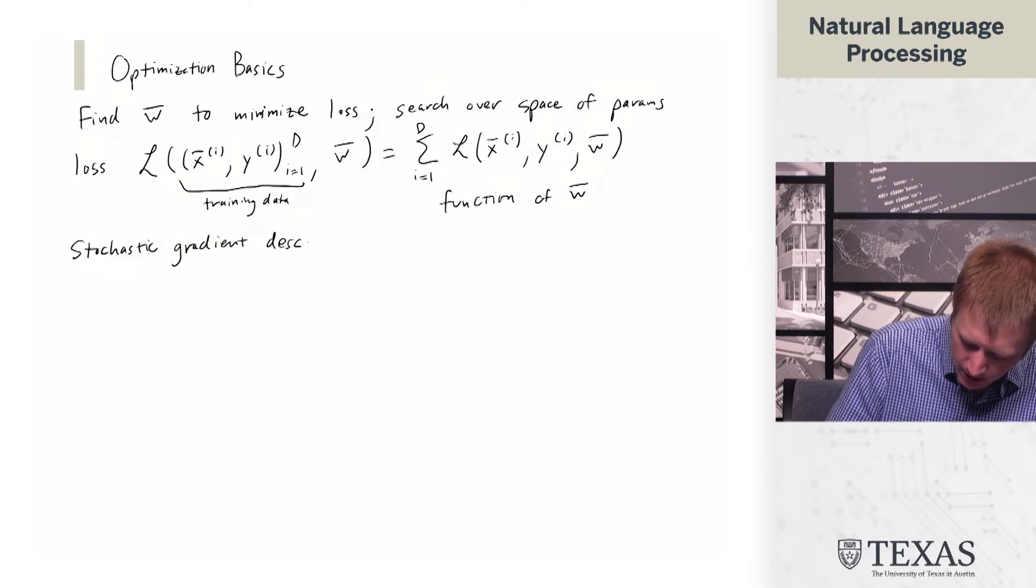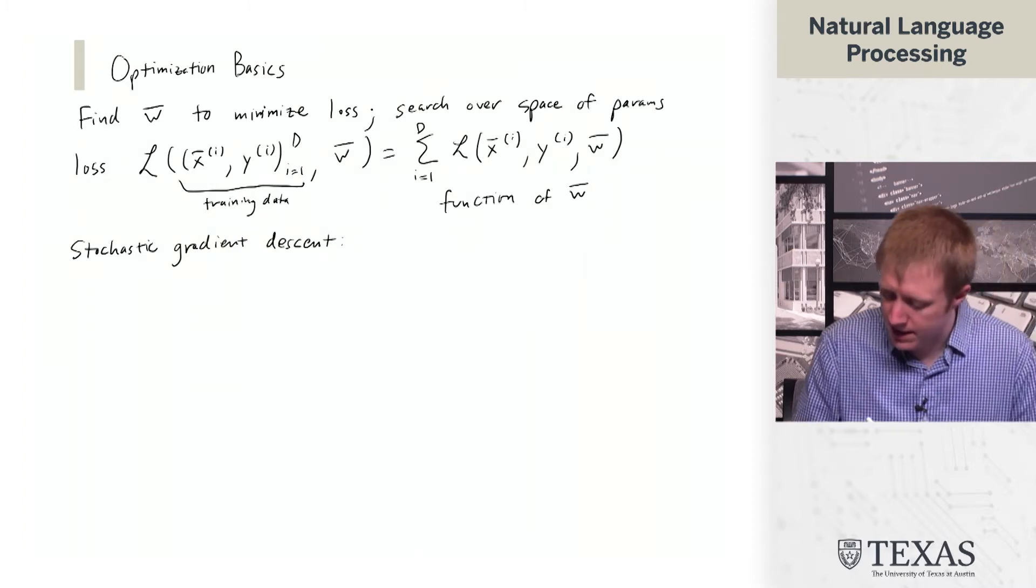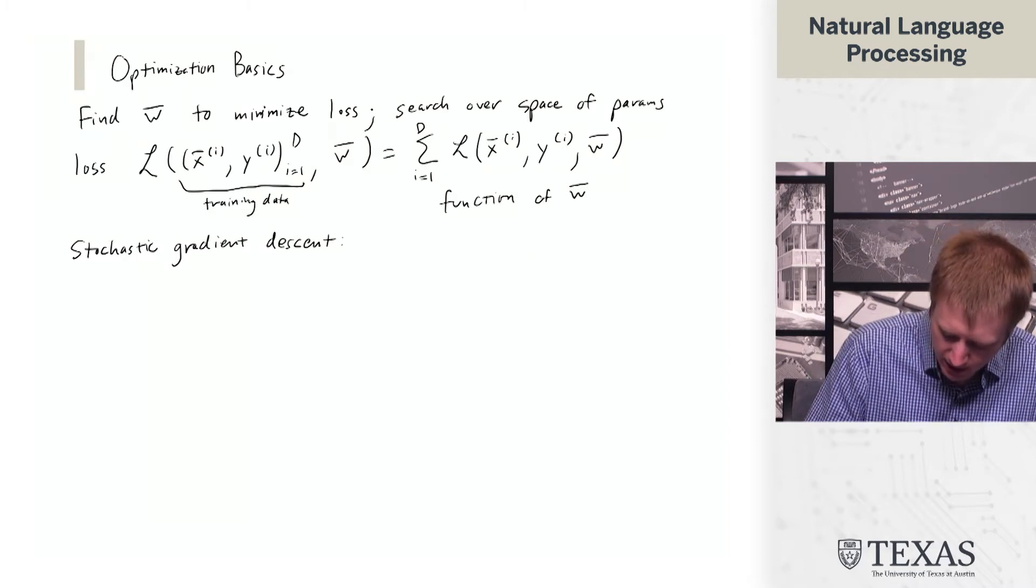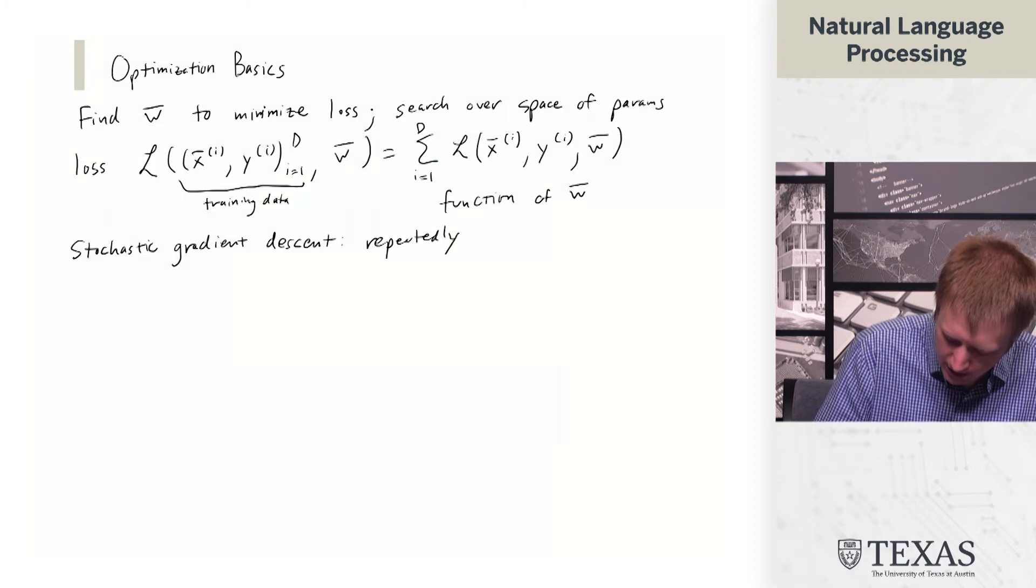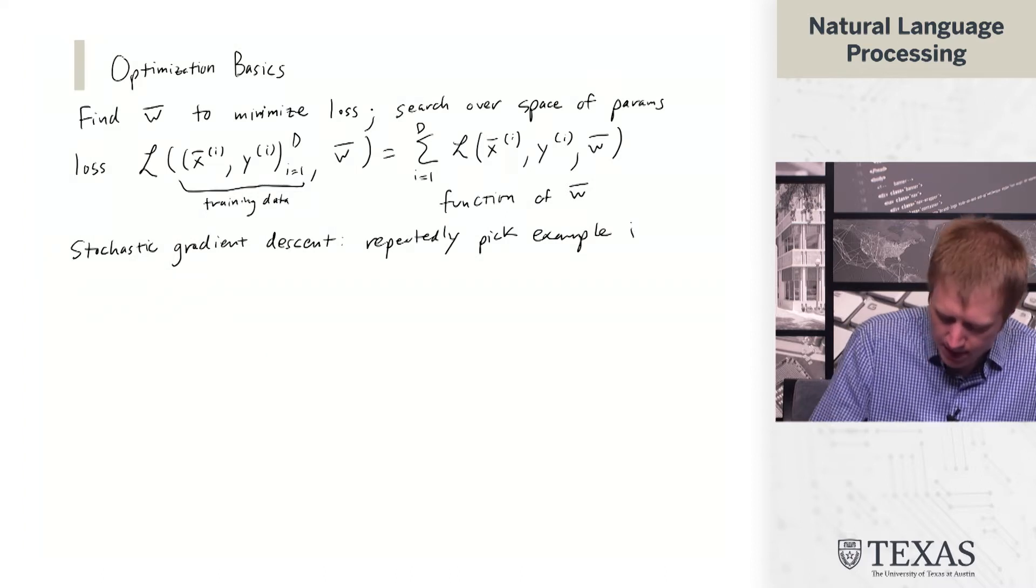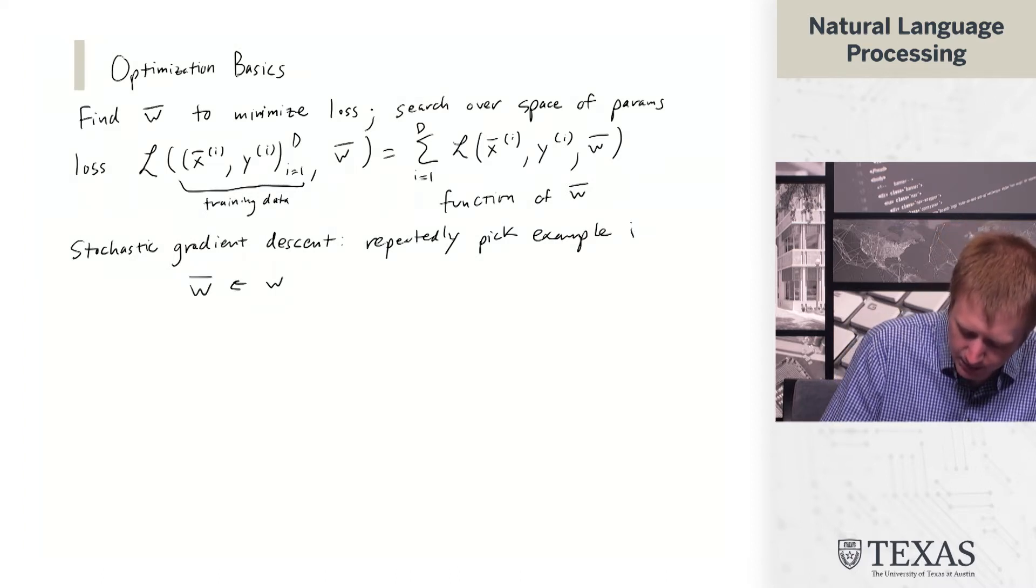In stochastic gradient descent, the idea was we repeatedly pick an example i and then apply this update.